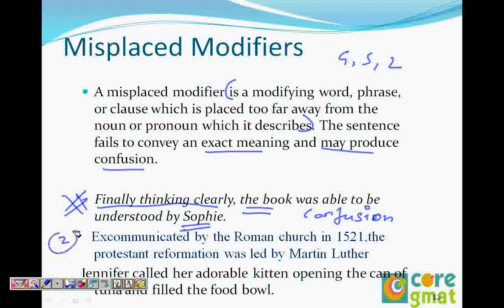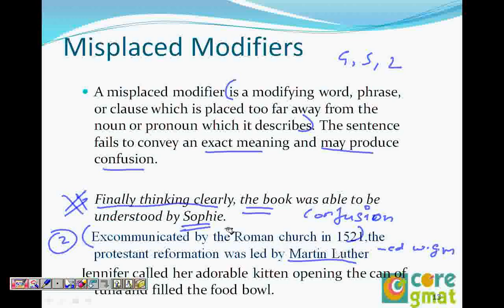The second example: 'Excommunicated by the Roman Church in 1521, the Protestant Reformation was led by Martin Luther.' Here, 'excommunicated by the Roman Church in 1521' is an ED-type modifier. We ask: who was excommunicated? It was Martin Luther, not the Protestant Reformation. So the modifier must be placed next to Martin Luther.